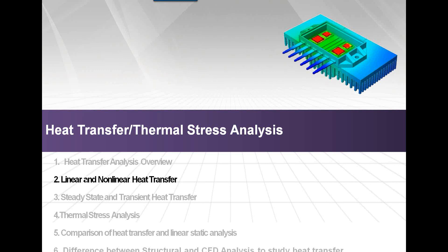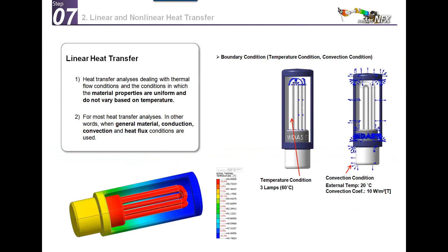Let's talk about linear and nonlinear heat transfer. In linear heat transfer, the flow conditions and thermal flow conditions are fixed — material properties are uniform and do not vary based on temperature. For most heat transfer analyses we use this because it's the simplest type: it's linear, done in one step, and you can use general material conduction, convection, and heat flux. Here is an example we'll perform right now.